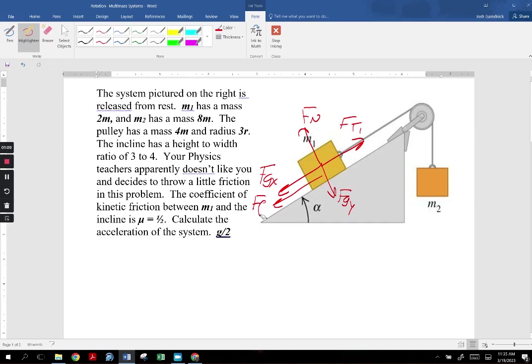It's going to move up the hill, so up the hill is positive. For the hanging mass, we've got FG acting down, and we've got FT2 acting up. The object is going to move down, so down is positive.